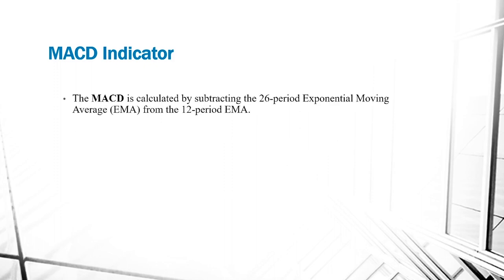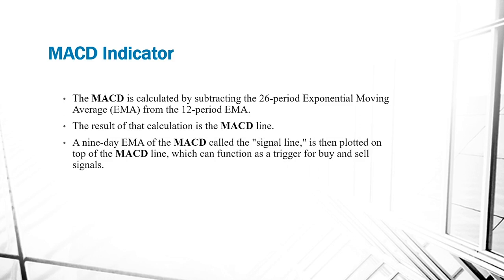The MACD is calculated by subtracting the 26-period exponential moving average (EMA) from the 12-period EMA. The result of this calculation is the MACD line. A nine-day EMA of the MACD, called the signal line, is then plotted on top of the MACD line.